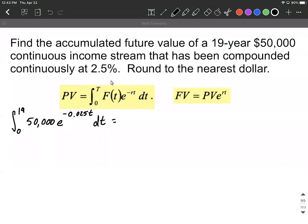The first thing I may do in this case is move that constant out in front. So we can say 50,000 can come out in front, still looking at the integral from 0 to 19, e raised to the negative 0.025t dt. To integrate this, we're going to need to do a u substitution.